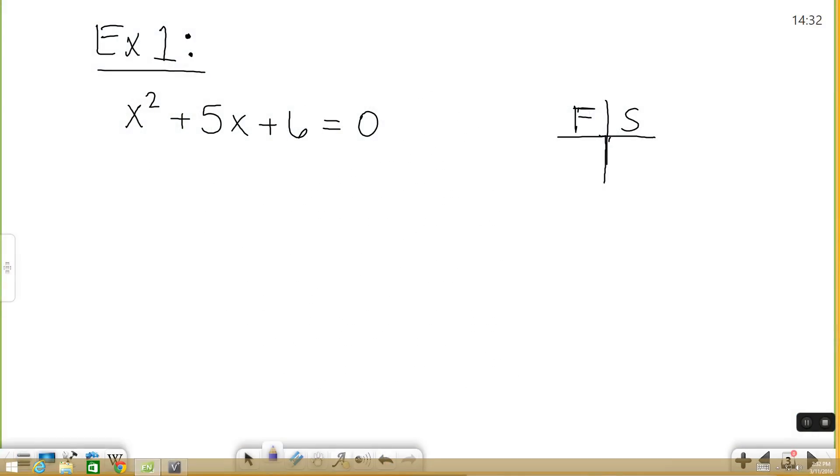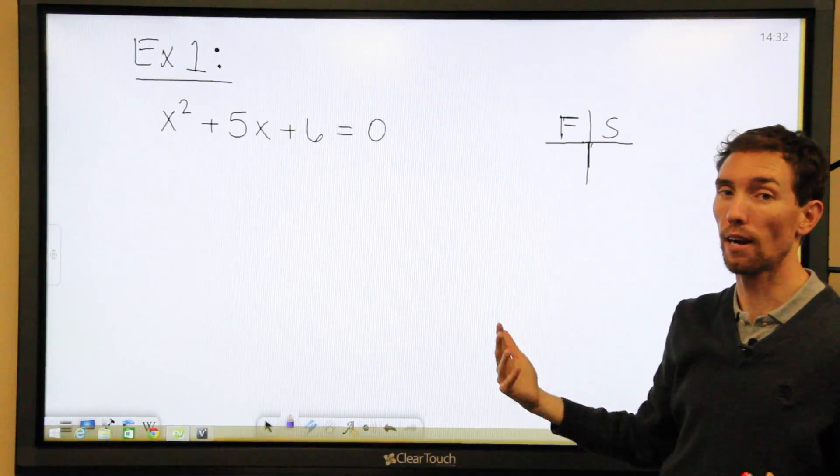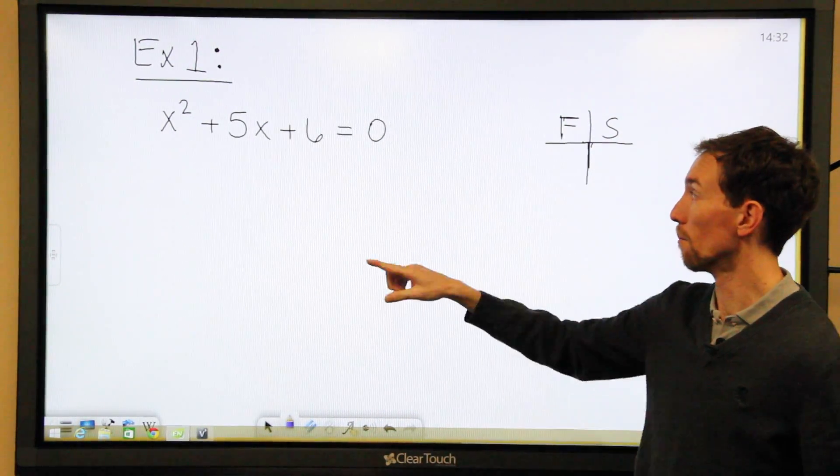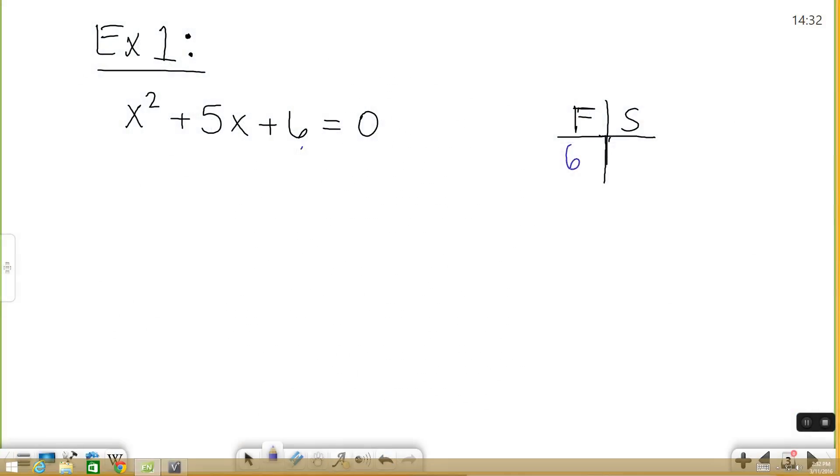So we have a quadratic equation x² + 5x + 6 = 0. Our a, which is the number in front of x squared, is 1. So that means we can go ahead and try our factor sum method. We need two factors of 6 that will add up to get 5. So let's take a look at those.